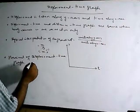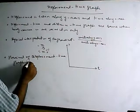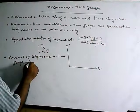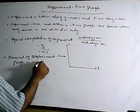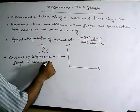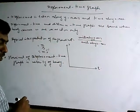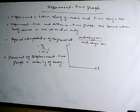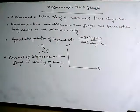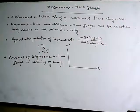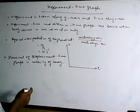Hence, the gradient of the displacement-time graph gives the velocity of the body. If the gradient is constant, the body is moving at constant velocity. If the gradient is not constant, the body is not moving at constant velocity, and velocity at different points can be found.